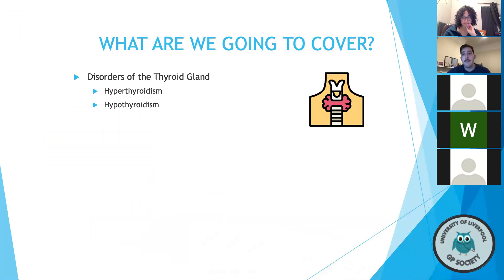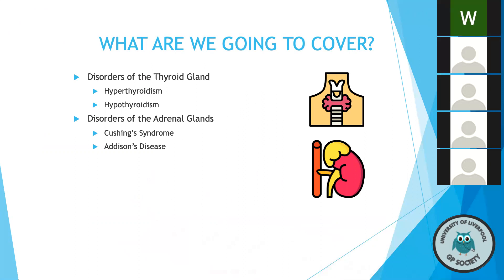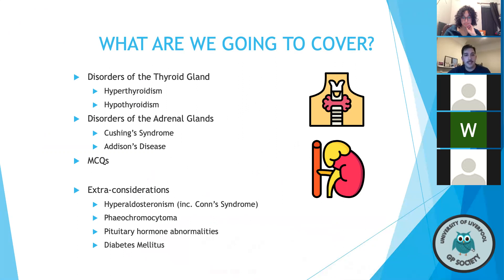So what are we going to cover? We're going to cover disorders of the thyroid gland, namely hyper- and hypothyroidism. We're going to cover Cushing's disease and Cushing's syndrome, and Addison's disease with regards to adrenal pathology, ending with a couple of MCQs. A couple of things we won't touch on are hyperaldosteronism, more specifically Conn syndrome, phaeochromocytomas, pituitary hormone abnormalities such as ADH and growth hormone derangements, and metabolic endocrinology like diabetes.